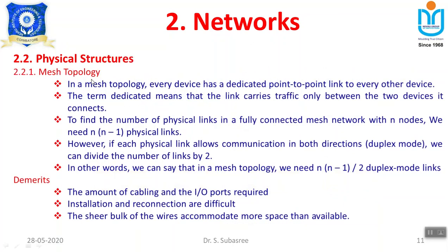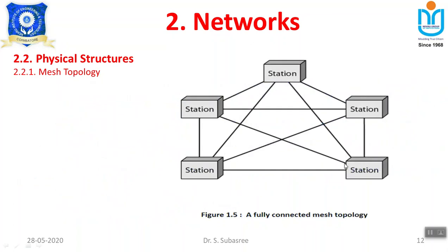In mesh topology, there is a dedicated point-to-point link to every other node. For example, with five stations, each station is connected with all other stations. The total number of links required is n×(n−1) — where n is the number of stations. For n=5, that is 5×4 = 20 links. Since links are used for both sending and receiving (duplex), the number of duplex links required is n×(n−1)/2, which gives a minimum of 10 lines.